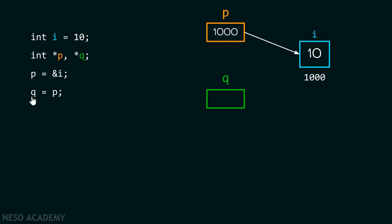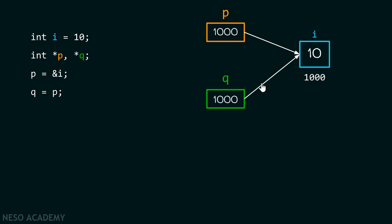So with the help of this statement, we can give this content to q. Now q will also contain 1000, which is the address of variable i. Therefore, q will also point to this variable. Both these pointers are pointing to the same location.